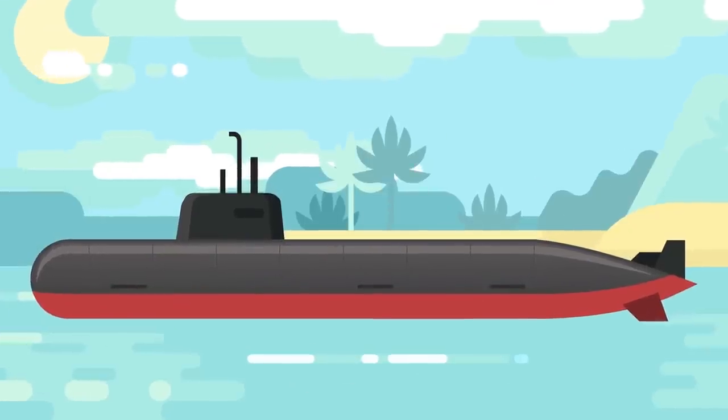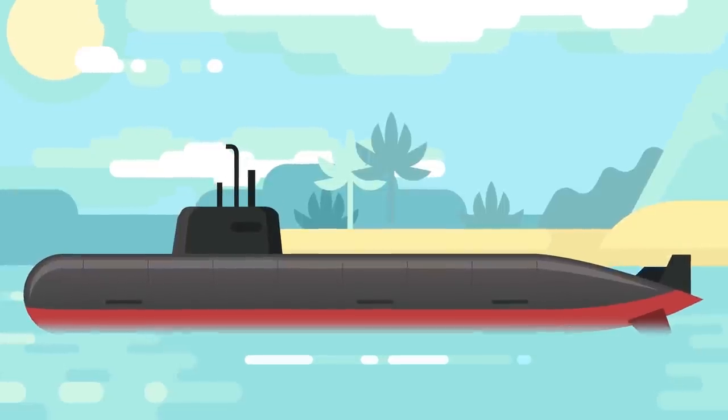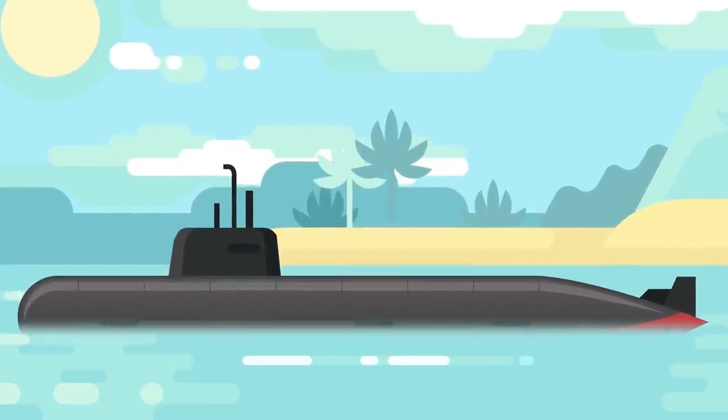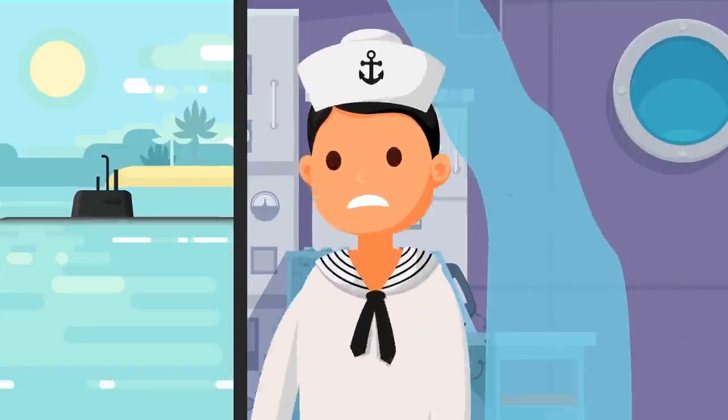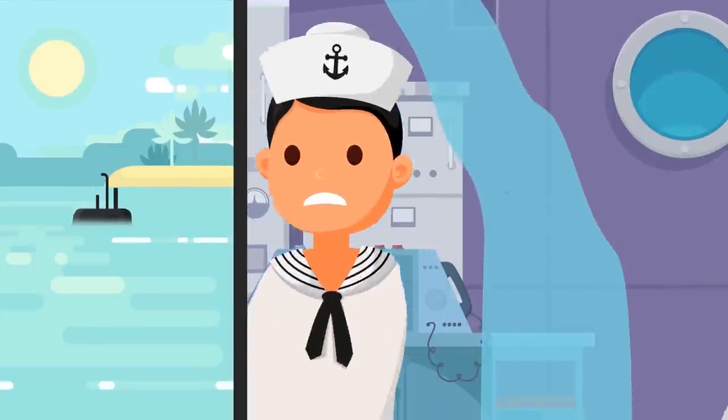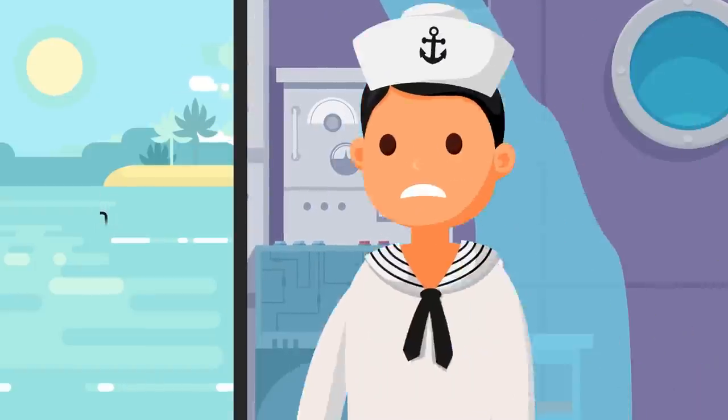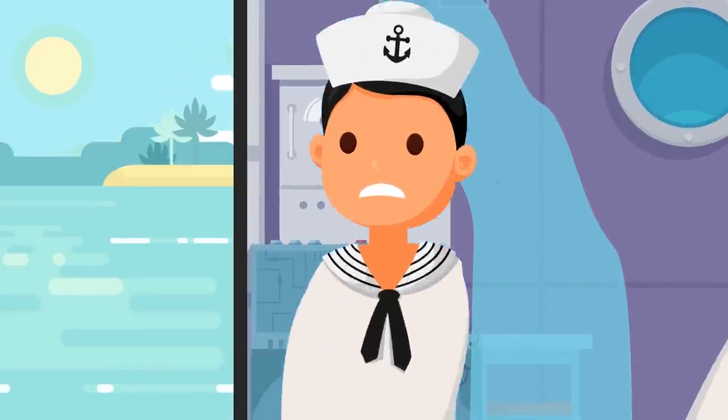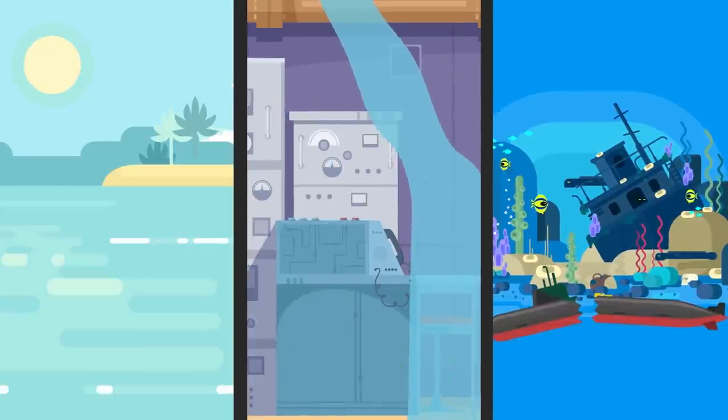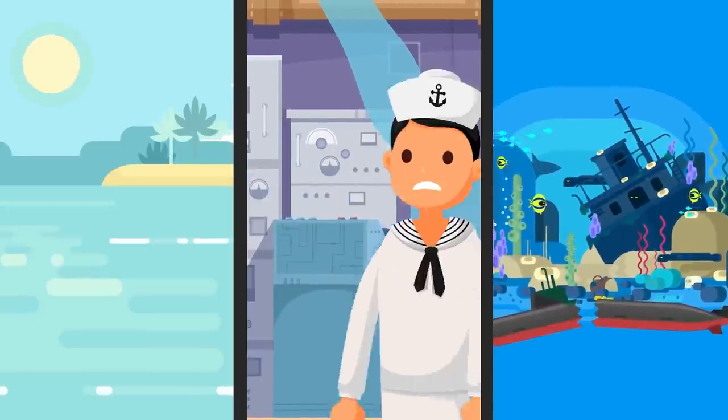39. The sinking of the USS Thresher was the greatest loss of life from a submarine accident ever. After a pipe joint failed, water burst into the sub and shorted out electrical systems, leading to a loss of power. When the ballast tanks were blown to resurface manually, ice plugged the valves and prevented the sub from rising, causing the Thresher to implode at a depth of about 1300 to 2000 feet.